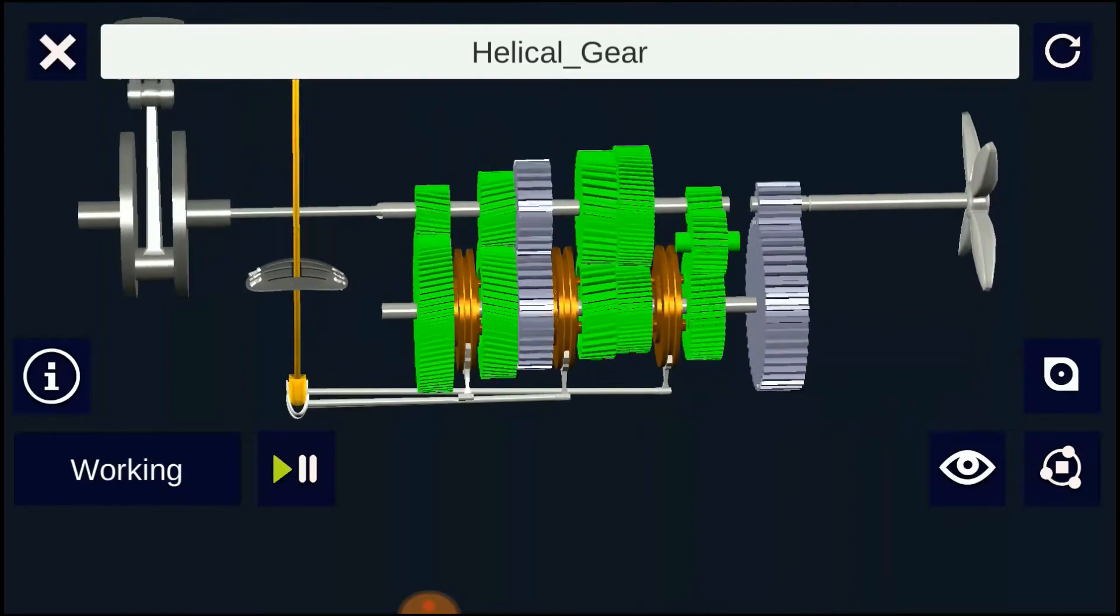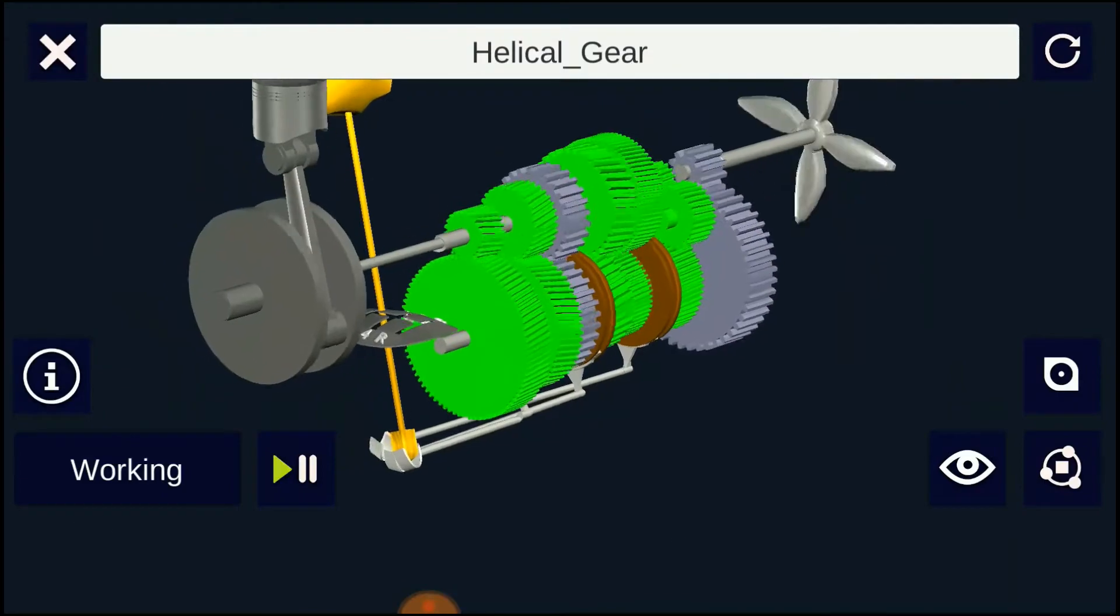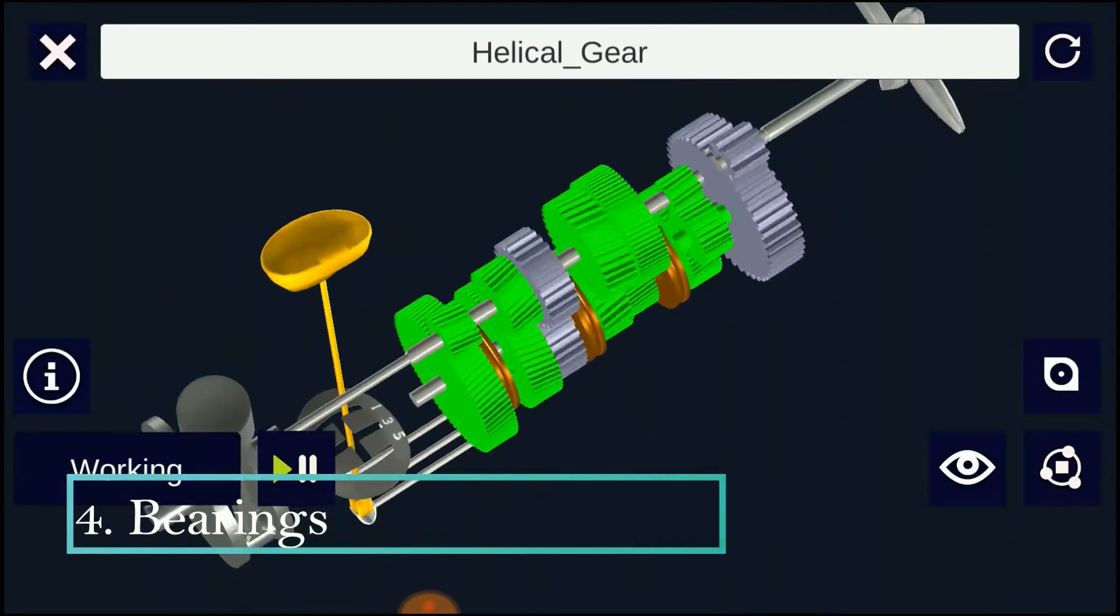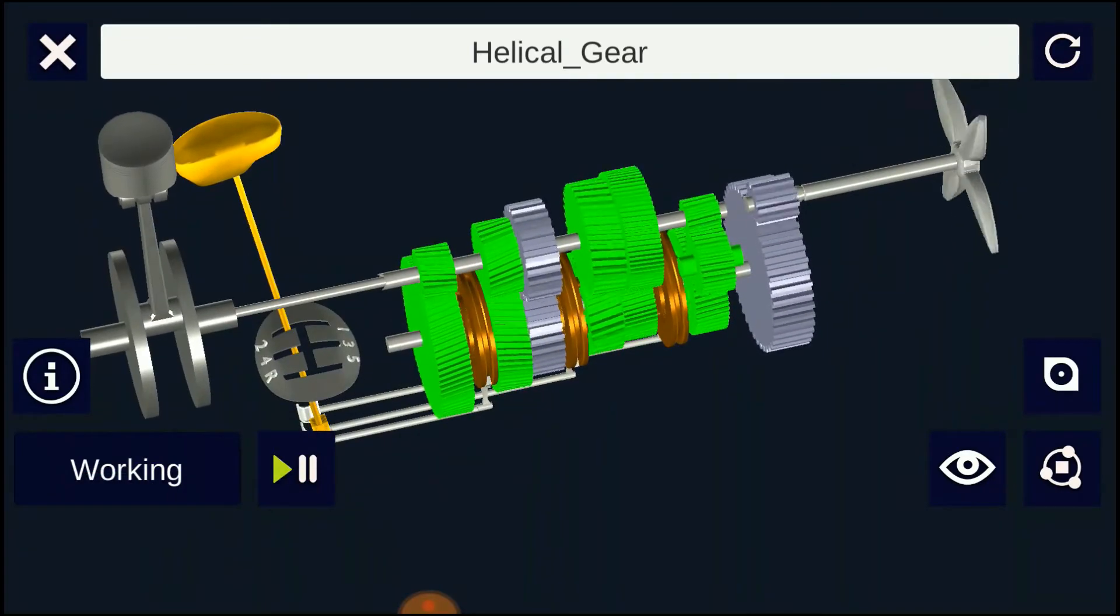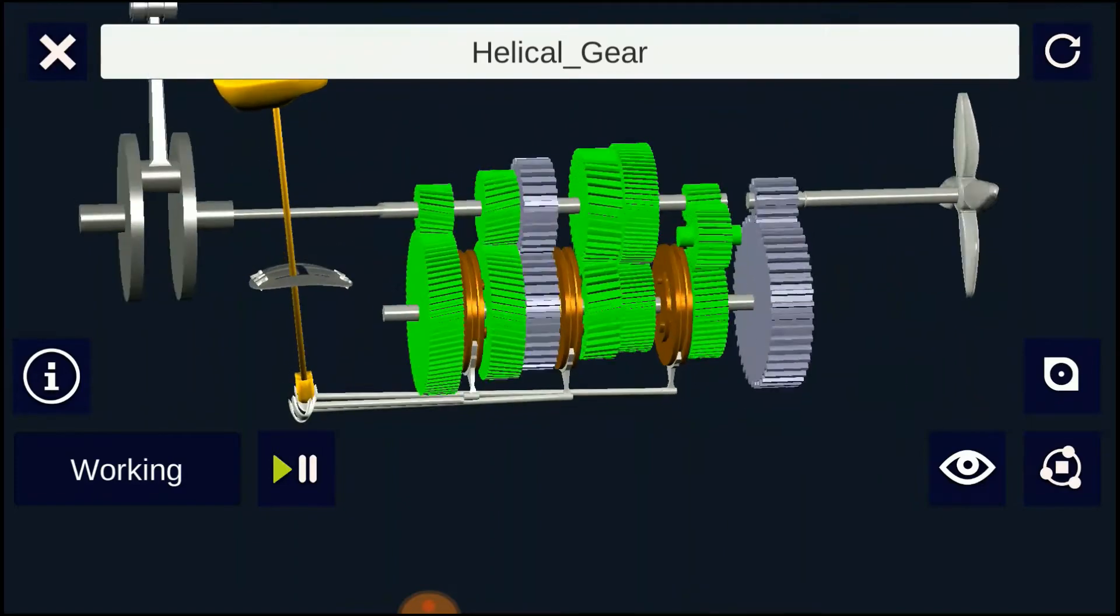A small car gearbox contains four speed gear ratios and one reverse gear. Whenever the rotary motion encounters, bearings are required to support the revolving part and reduce the friction. In the gearbox, both counter and main shaft are supported by the bearing.